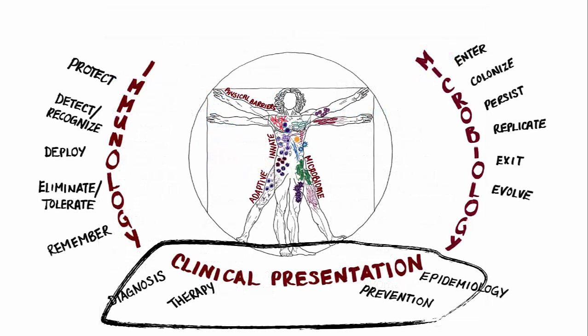Now let's talk about the virus and how the clinical syndromes relate to the life cycle of the virus. What viruses want to do is spread to other hosts — essentially exit. The strategy that respiratory viruses have evolved is to replicate quickly, reaching high numbers of viruses causing acute infection.